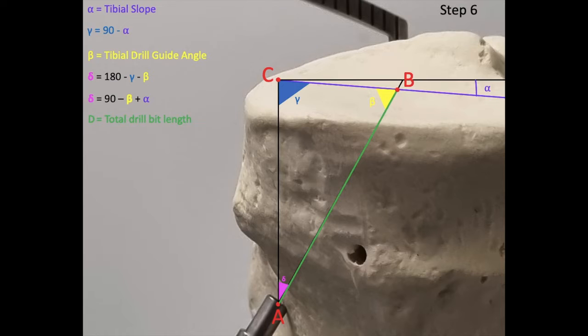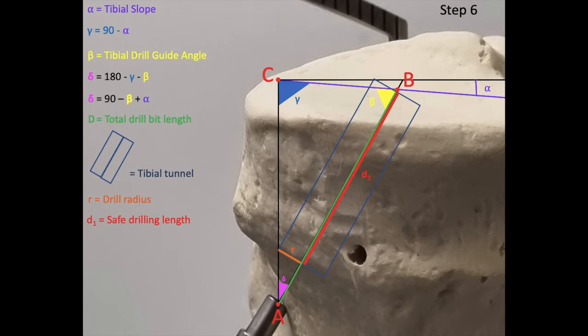Now the green line represents the total drill bit length which we've previously recorded. The blue rectangle represents the tibial tunnel of a radius r of its maximum length. D1 represents the safe drilling length for this tunnel. In order to calculate D1, we need to solve for D2.